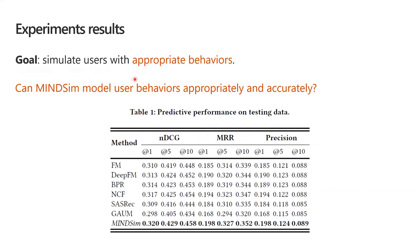Here are some predictive performance results, addressing the question of whether MindSync models user behaviors appropriately and accurately. This is related to the aspect of appropriate behaviors in our goal. We compare the ranking performance with multiple baselines. MindSync outperforms the baselines, demonstrating that MindSync can accurately predict user clicks and appropriately model user behaviors with fast and complex user interest changes when building the user simulator for news recommenders.